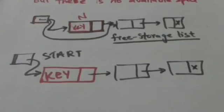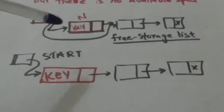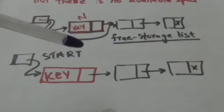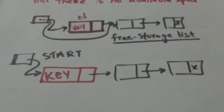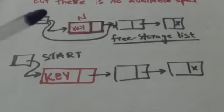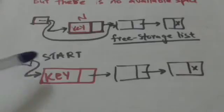If we have to insert node N at the beginning of the linked list, then the value of the list pointer variable 'start' should be copied into the next pointer field of node N, so that node N points to the original first node. After this, the location of node N is assigned to the list pointer variable 'start', so that 'start' points to node N.